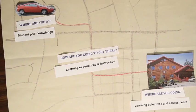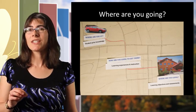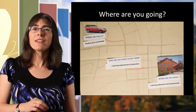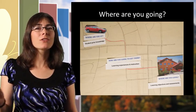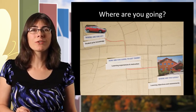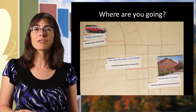So remember our car analogy. Learning objectives give us that target of where you're going, and then the student prior knowledge lets us know where we're starting at, and then we use instruction to bridge the two and help students get to our goals and where we want them to be.